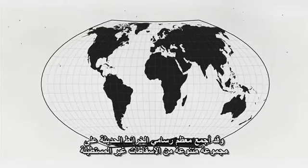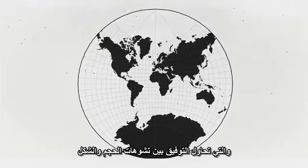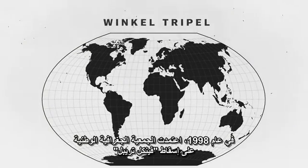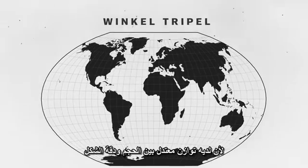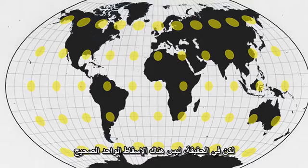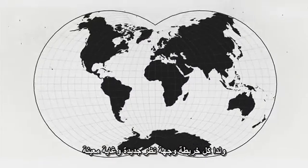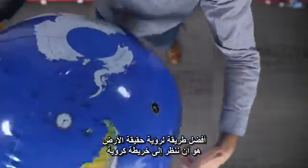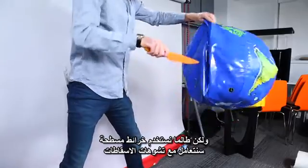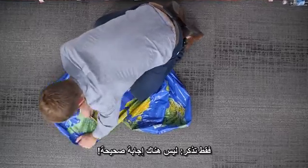But on a world map scale, cartographers rarely use the Mercator. Most modern cartographers have settled on a variety of non-rectangular projections that split the difference between distorting either size or shape. In 1998, the National Geographic Society adopted the Winkel Tripel projection because of its pleasant balance between size and shape accuracy. But the fact remains that there's no right projection — cartographers and mathematicians have created a huge library of available projections, each with a new perspective on the planet and each useful for a different task. The best way to see the earth is to look at a globe, but as long as we use flat maps, we'll have to deal with the trade-offs of projections. Just remember: there's no right answer.